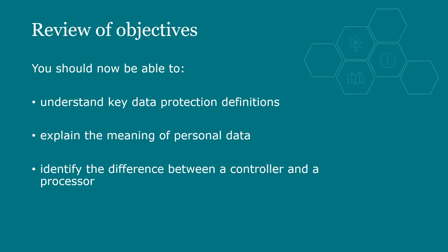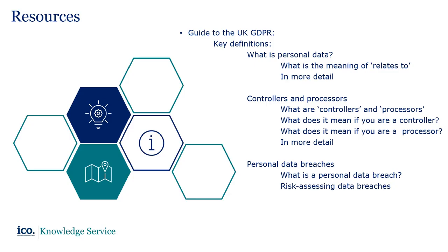You have now completed Module 2 and you should be able to understand the key data protection definitions, explain the meaning of personal data, and identify the difference between a controller and a processor. There is further information on these topics in our guidance on our website and you will find the relevant links in your notes. The Guide to the UK GDPR contains detailed guidance aimed at controllers, and there are key sections relevant to our discussion today. Don't forget that for internal use we also have knowledge packs and the knowledge builder, which are other valuable sources of information. I hope you have enjoyed the module and that it has been useful for you. Thank you for listening.